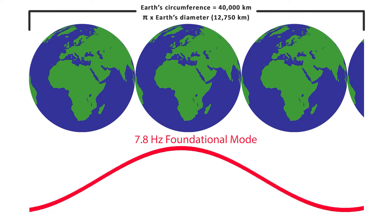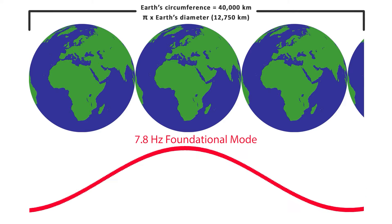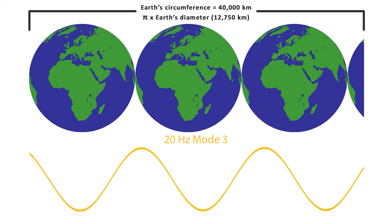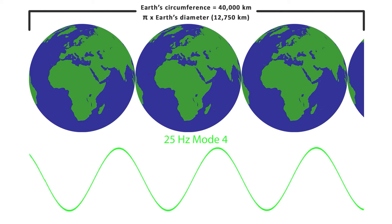What makes the Schumann Resonances unique is that they have huge wavelengths thousands of kilometers long. The first Schumann Resonance with the 40,000 kilometer wavelength has a corresponding frequency of about 7.8 hertz and is known as the foundational mode. The next Schumann Resonance standing wave exists at 14 hertz and this is the second mode. A third mode exists at 20 hertz and modes 4 and beyond exist at higher frequencies.